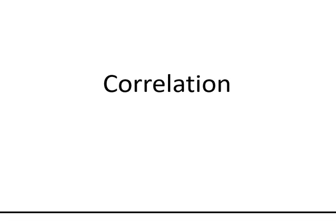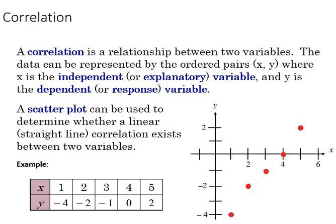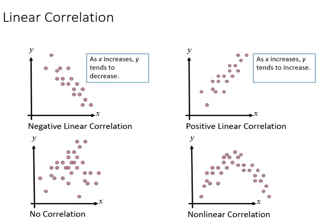This presentation is going to go over correlations. A correlation is used to examine a relationship between two variables, and the data are represented as x-y pairs with x as the independent and y as the dependent variable. We can view this graphically by examining a scatter plot. The relationship between two variables can range from positive to negative, and from linear to nonlinear to no correlation at all. These graphs all represent images of those possibilities.